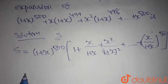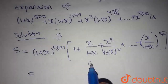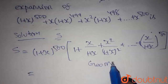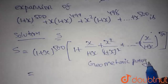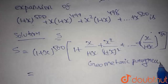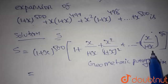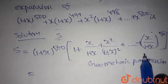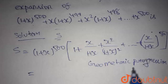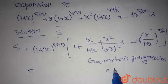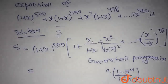This is nothing but a geometric progression. The sum of n terms in a geometric progression is given by a into (1 minus r to the power n) divided by (1 minus r).